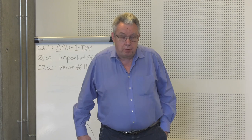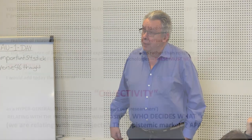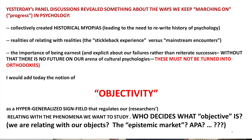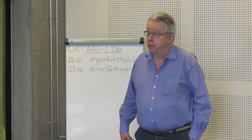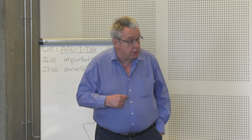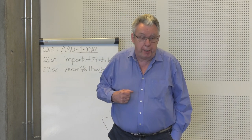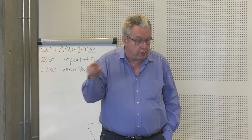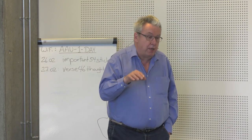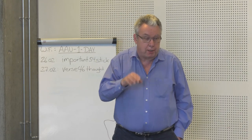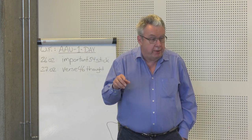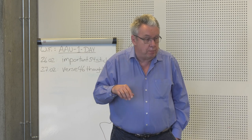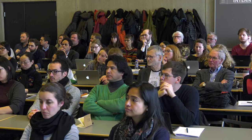I want to discuss the notion of objectivity, which I consider not objective, but a hyper-generalized sign field that actually regulates our researchers' way of thinking. Who determines, who decides what is objective? The old traditional way of looking at objectivity is relating to our objects — the monks' way. The monks would study different objects sitting in monasteries. They would disagree with one another about the object, but they would not disagree about the fact that they spent lifetimes trying to make sense of it. This tells us something about the difference between psychologists and physicists.